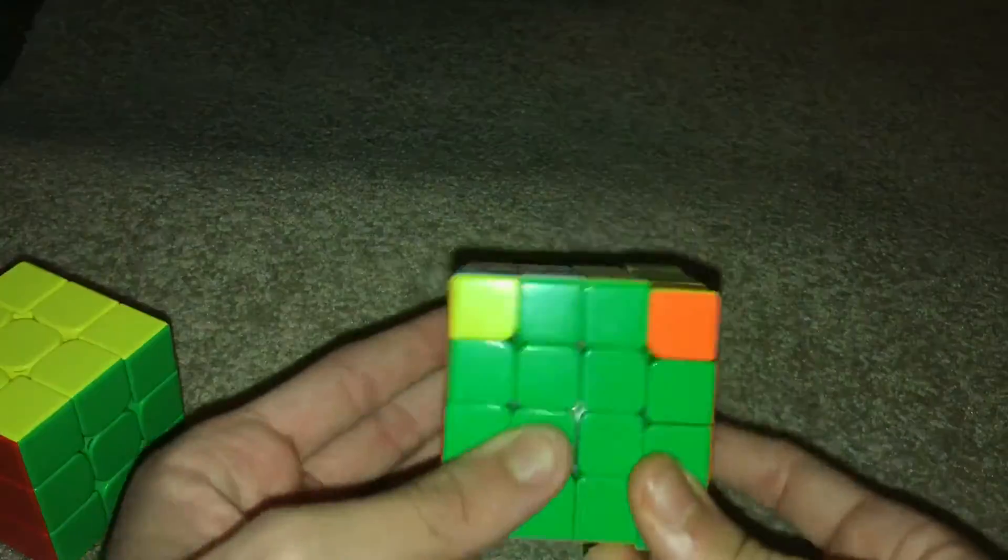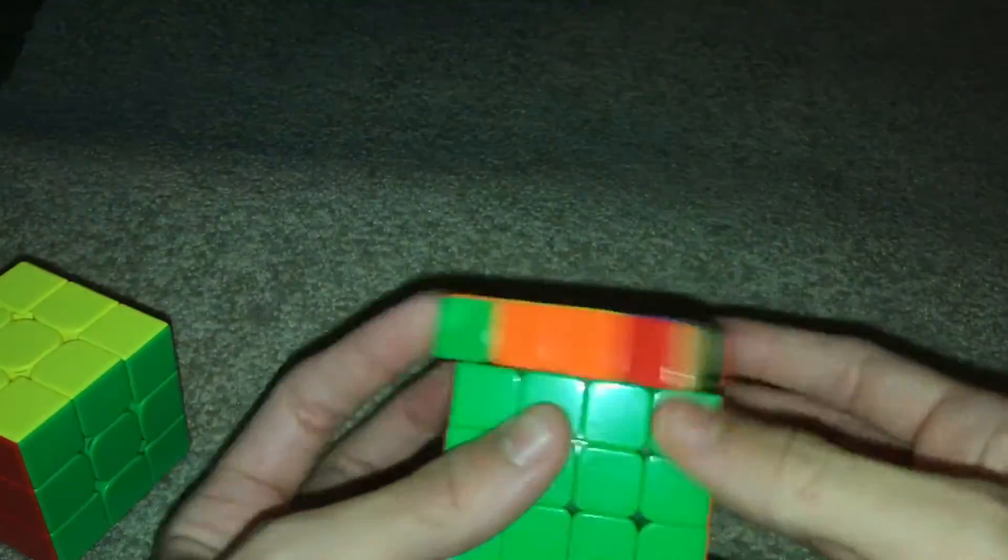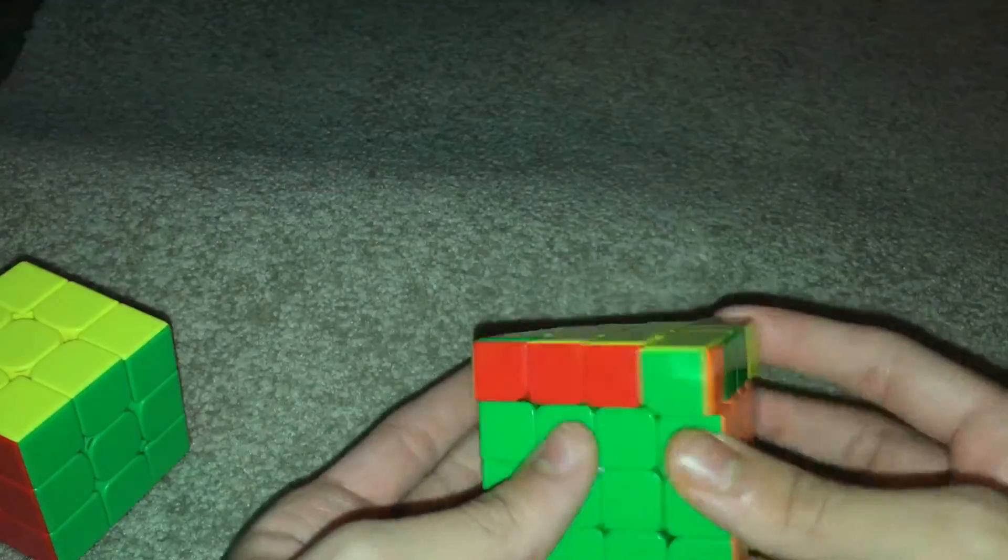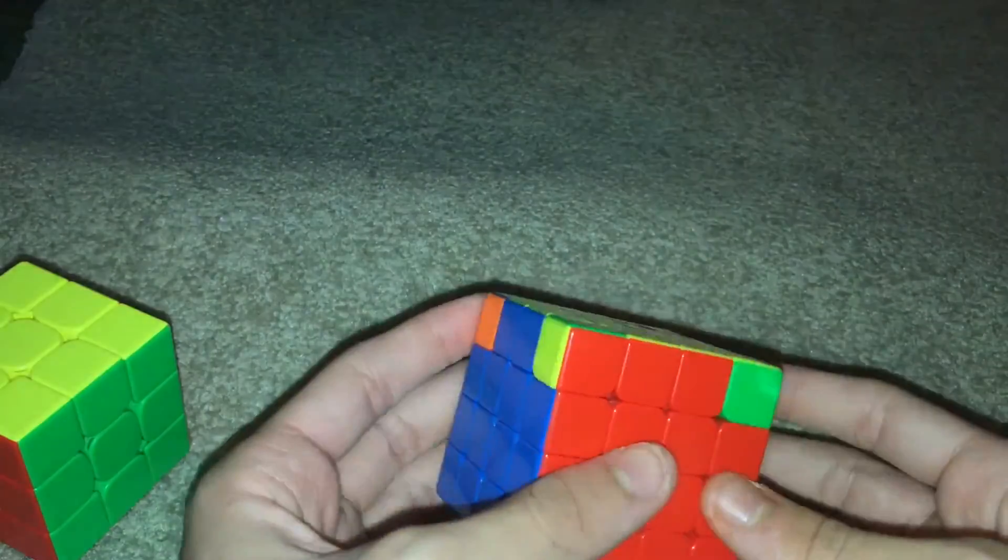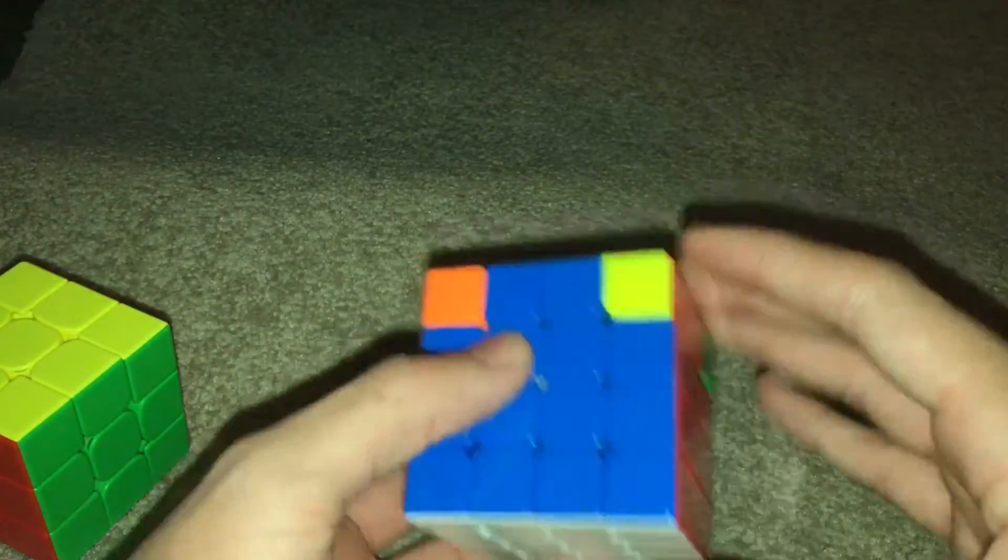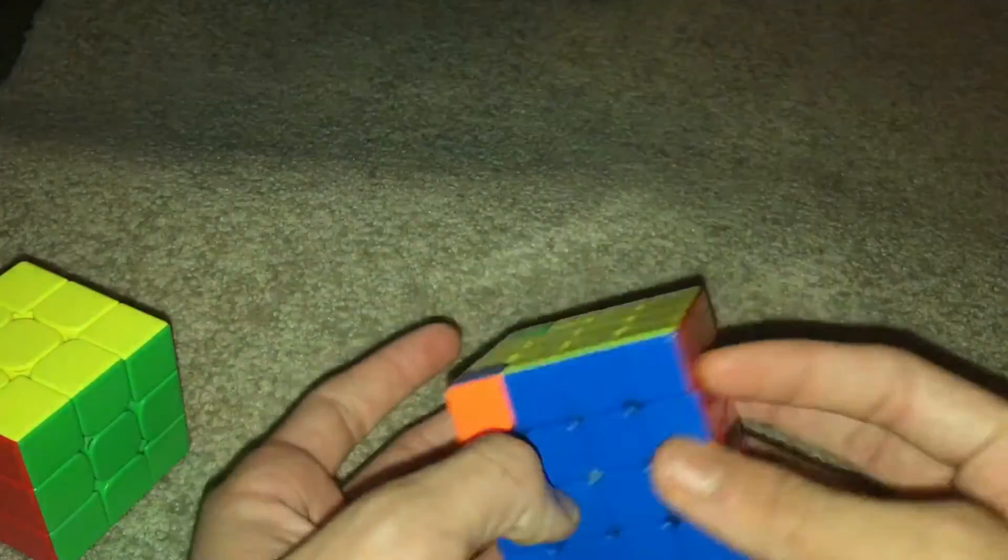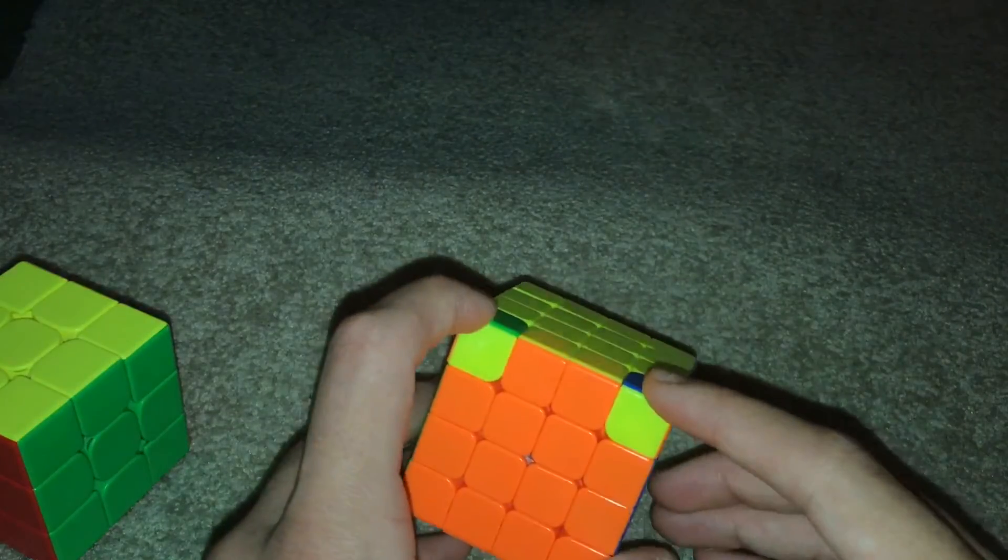So you do the algorithm like so. And you basically solve it again from what you were just doing. And then you're not gonna run into the problem again. So let me show you. And look, I got all of them now instead of these two needing to swap.